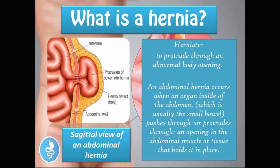So what is a hernia? The word herniate means to protrude through an abnormal body opening. An abdominal hernia occurs when an organ inside the abdomen — usually the small bowel or small intestine — pushes through an opening in the abdominal muscle tissue that holds it in place. You can see here the intestine pushes through the layer of abdominal muscle and fatty tissue, and this is what it looks like on sagittal view.